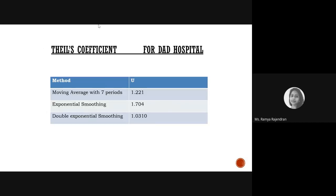For our DAD hospital data, the Theil's coefficient value for the moving average method with n equal to seven is 1.2. For exponential smoothing it is 1.7, and for double exponential smoothing it is 1.0310.